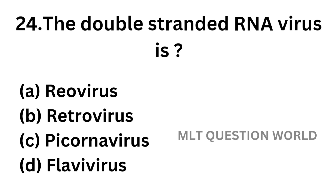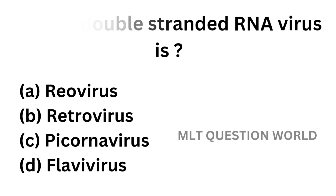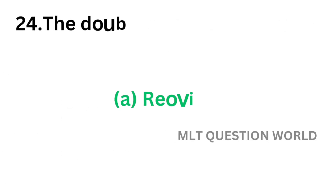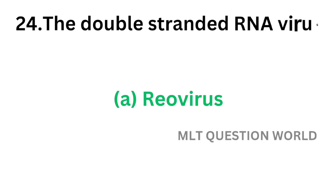Question number 24. The double-stranded RNA virus is: option A, Reovirus; option B, Retrovirus; option C, Picornavirus; option D, Flavivirus. Which of the following is the double-stranded RNA virus? The correct answer is option A, Reovirus. Reovirus is a double-stranded RNA virus.